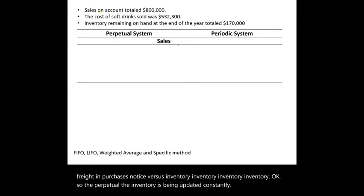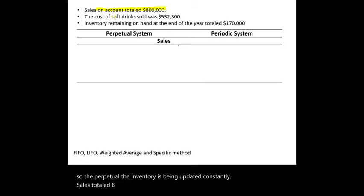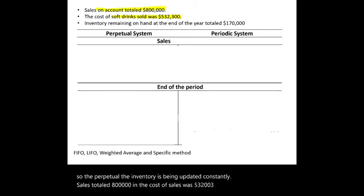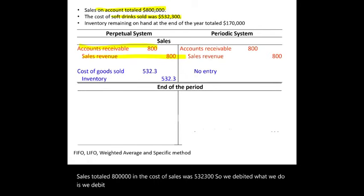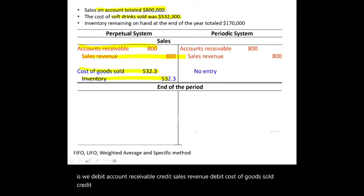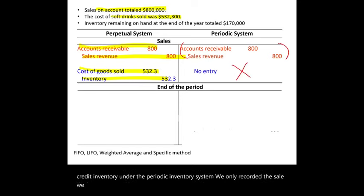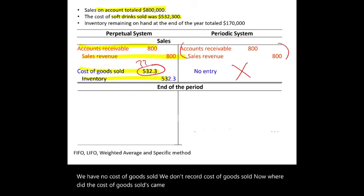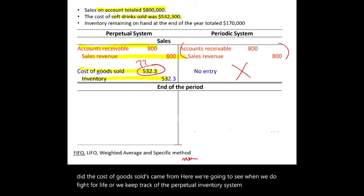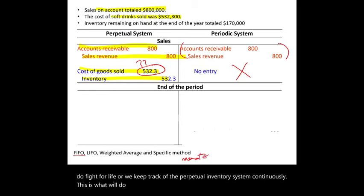Sales totaled $800,000 and the cost of sales was $532,300. Under perpetual, we debit Accounts Receivable and credit Sales Revenue, then also debit Cost of Goods Sold and credit Inventory. Under the periodic inventory system, we only record the sale — we do not record cost of goods sold at the time of sale. We'll see where cost of goods sold comes from when we do FIFO and LIFO in the next session.